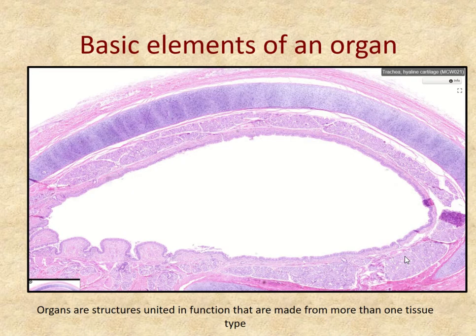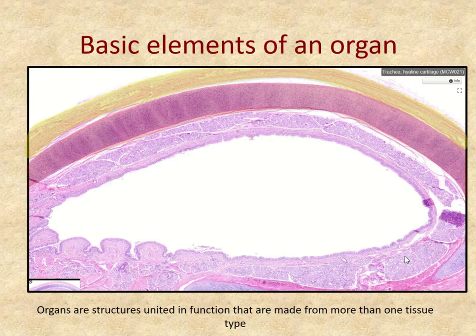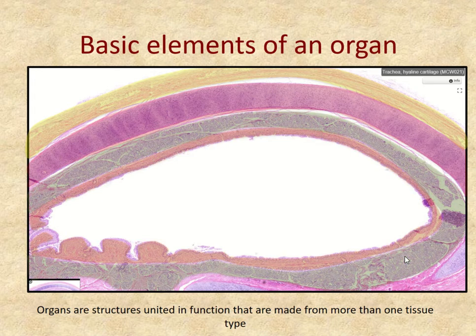The basic description of an organ is that it is a structure that has multiple tissues in it — more than one tissue comes together to make an organ. Here is a section through the trachea. You can see one tissue type highlighted in yellow, another tissue type deep to that, another deep to that, and yet one or two more. All of these tissues layered in this organ come together to make a trachea, which has an ultimate purpose or function.